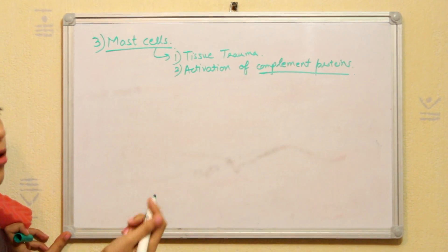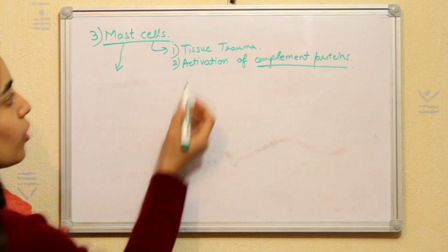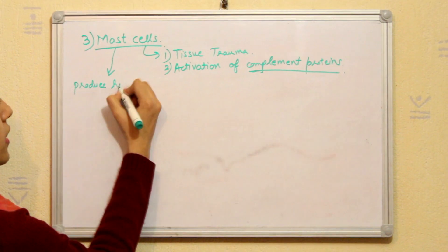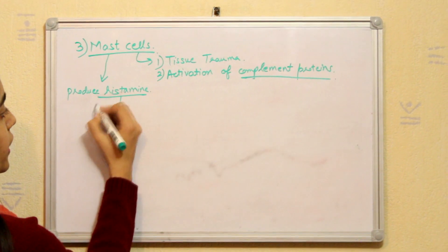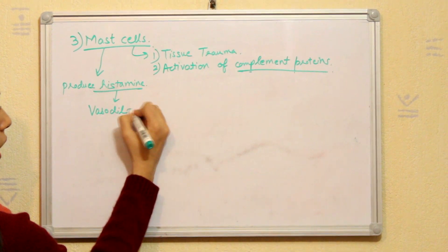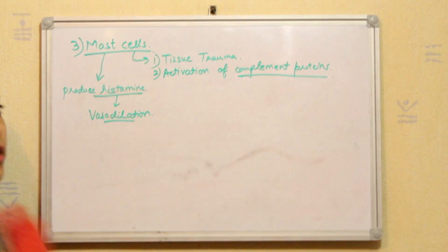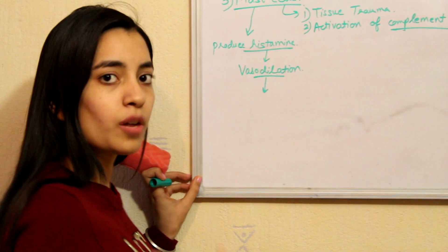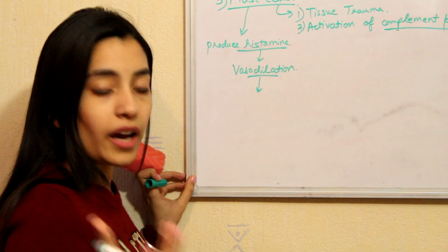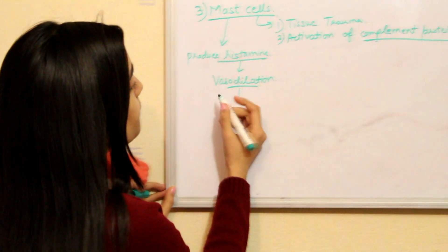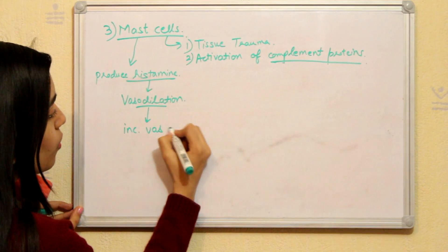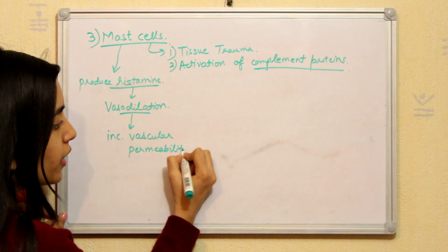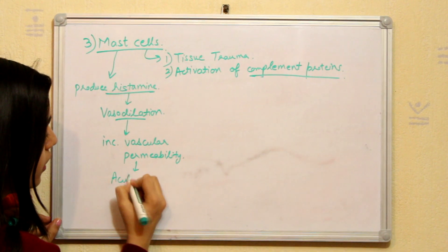So what is the mechanism of mast cells? Mast cells, when they are activated or when there is tissue trauma, the mast cells will be activated and it will then produce histamine. Histamine will lead to vasodilation and as we have discussed, when the vessels are dilated, it will allow all the other small molecules to come inside like drugs, nutrients, ions or lymphocytes or other cells. So it will cause increased vascular permeability and therefore it will result in acute inflammation.